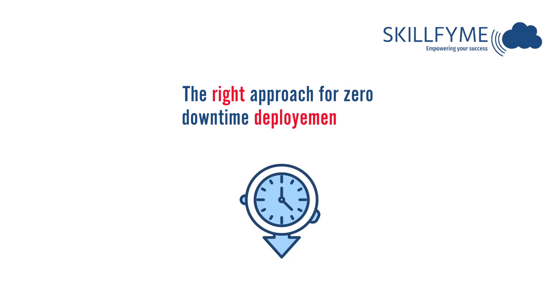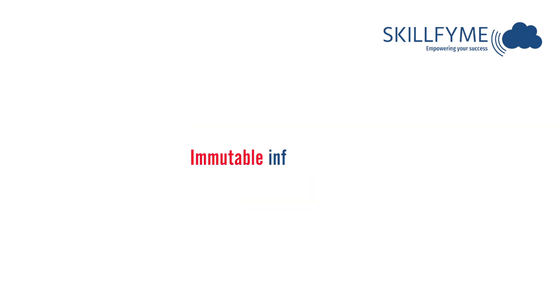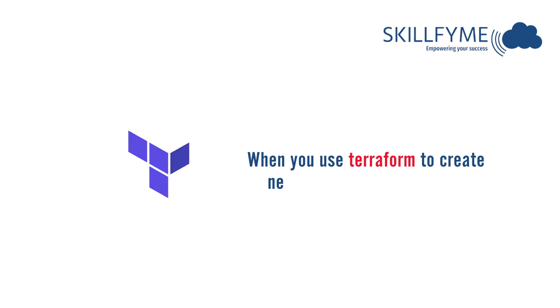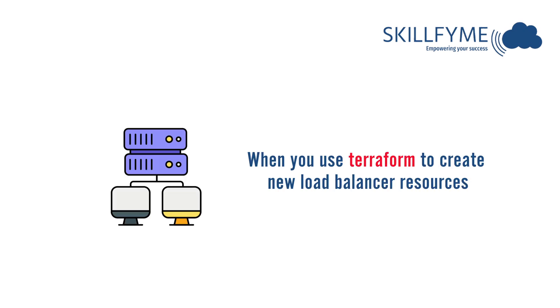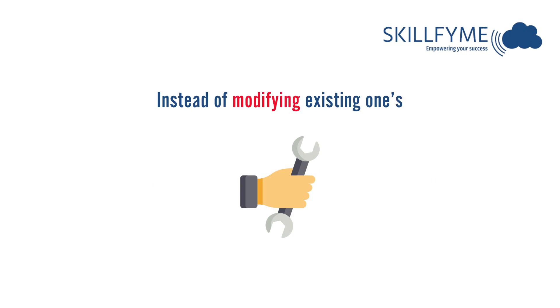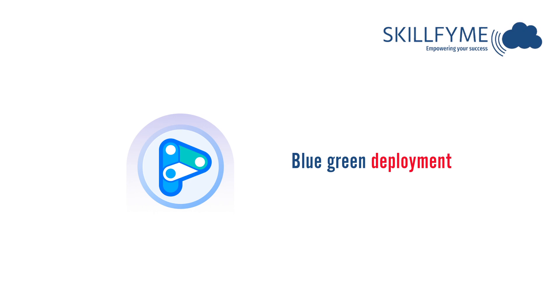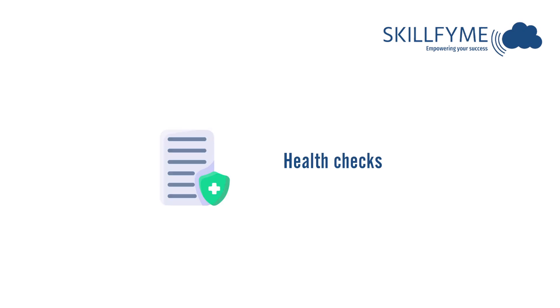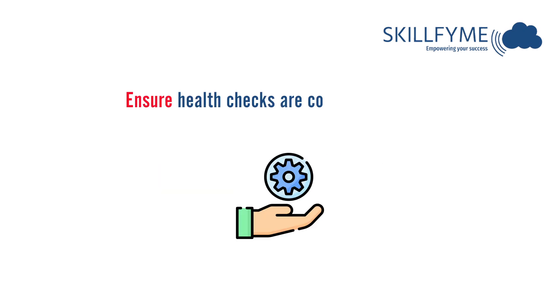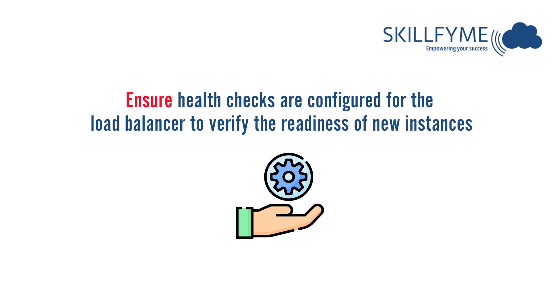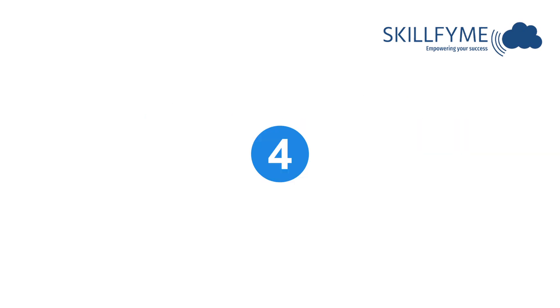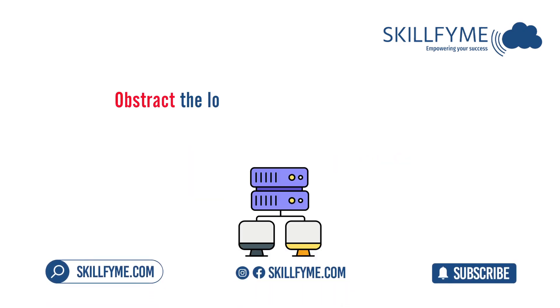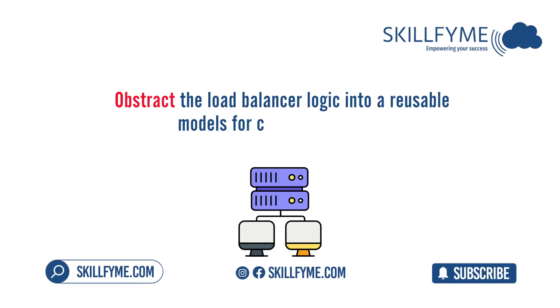The right approach for zero downtime deployments involves: immutable infrastructure — use Terraform to create new load balancer resources instead of modifying existing ones. Blue-green deployment — deploy a new target group, associate it with the updated resources, and gradually shift traffic. Health checks — ensure health checks are configured for the load balancer to verify the readiness of new instances. Finally, abstract the load balancer logic into a reusable Terraform module for consistent updates.